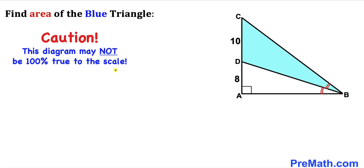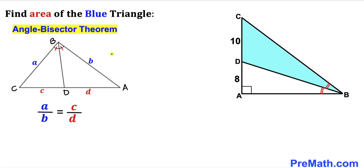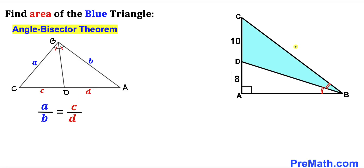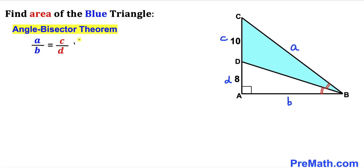Note that this figure may not be 100% true to scale. Let's get started and recall the angle bisector theorem. BD is an angle bisector in triangle ABC, and we are going to have a proportion A divided by B equals C divided by D. In our case, let me label this side as A, this side B, this line segment C, and this line segment lowercase d.